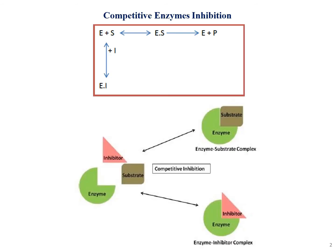Let's get started. The first type of inhibition we'll cover is competitive enzyme inhibition. This inhibition is called competitive because the substrate competes for the active site of the enzyme. This is based on the general enzymatic kinetic equation — when enzyme plus substrate combines to form an enzyme-substrate complex, which leads to the formation of product.